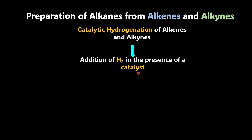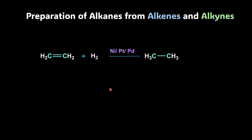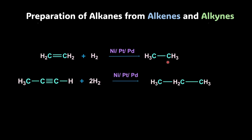What catalyst? Nickel, platinum, palladium — any of these metals can be used. So if you take an alkene and add hydrogen to it in the presence of any of these metals, what you get is alkane. Similarly, if you're taking an alkyne, then you need to add two moles of hydrogen in the presence of either nickel, platinum, or palladium and you would get alkane.